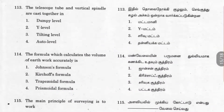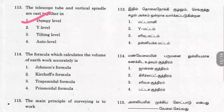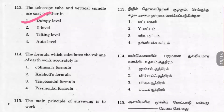Question 113: In the dumpy level, the telescope tube and the vertical spindle are cast together. Question 114: Among the formulas for calculating the volume of earthwork, the most accurate method is the prismoidal formula.